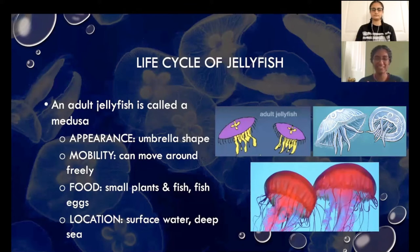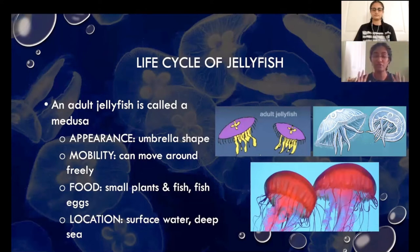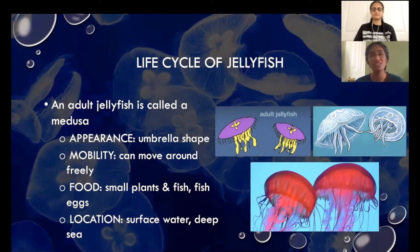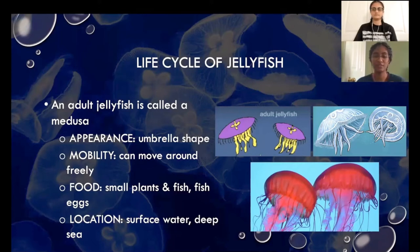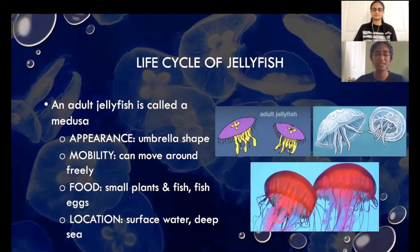Now we'll start with the life cycle of a jellyfish. An adult jellyfish is called a medusa. It has an umbrella shape and it can move around the ocean freely by squeezing its body and pushing forward. A medusa pretty much eats anything it runs into, like small plants and small fish, even fish eggs. A medusa can also live in surface waters or in the deep sea. On the right are some diagrams and a real life image of what a medusa looks like. As you can see, it has an umbrella shape at the top and leg-like shapes coming from the bottom.